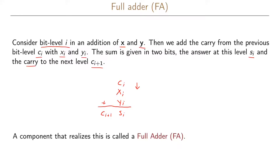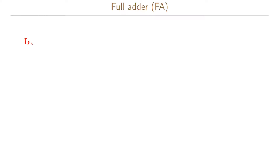So we have three inputs and two outputs from the component that realizes this operation. We call this component a full adder. Let us try to realize this full adder by writing the truth table for it.